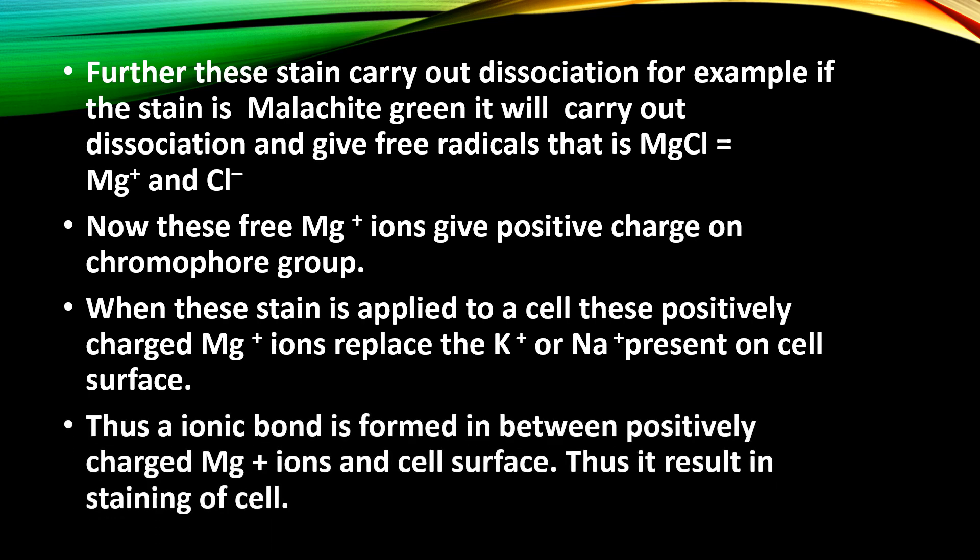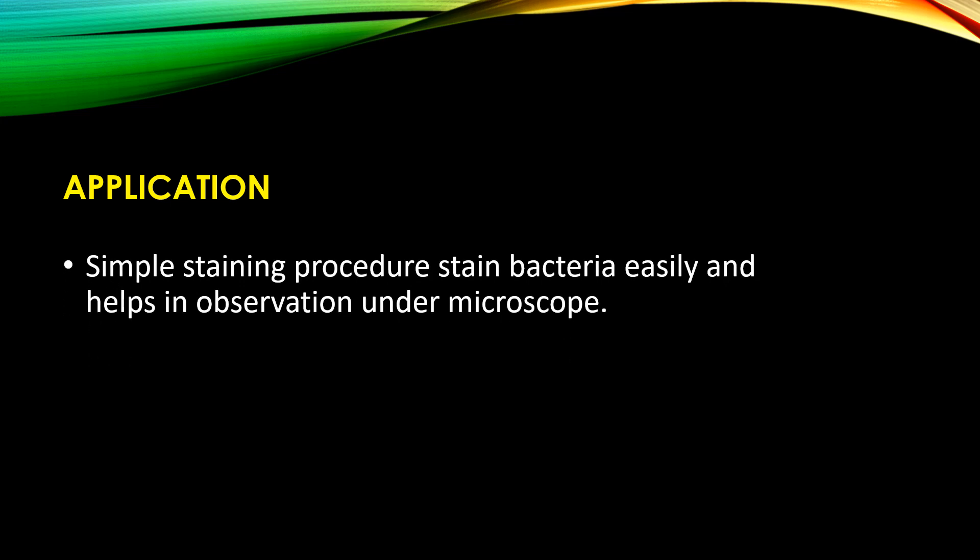Now the cell has MG⁺ ions on its surface, and an ionic bond is formed between the positively charged MG⁺ ions and the cell surface. As the ions are replaced, MG⁺ ions form an ionic bond with the cell surface, resulting in the staining of the cell. The cell gets stained with the basic stain.